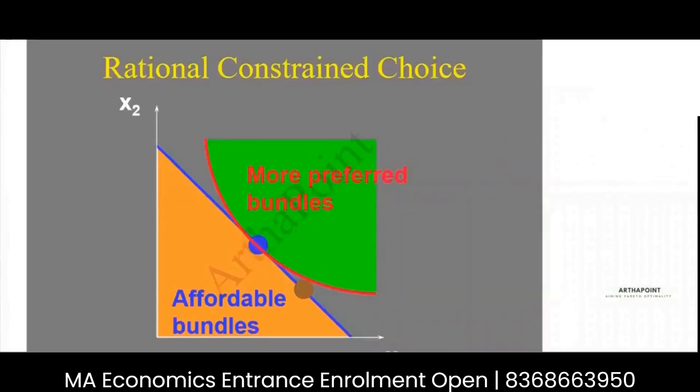Okay, so that's what we're doing. Then let's go ahead and understand the rational constraint choice that a consumer has. See, what happens in this case now is that we have a budget line.